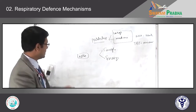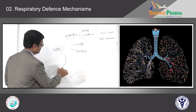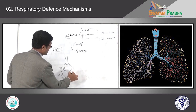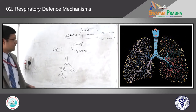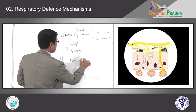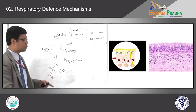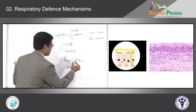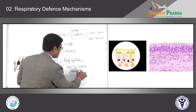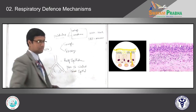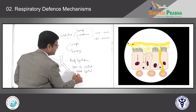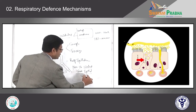When the majority of particles are cleared by the nose, the next medium-size particles enter the tracheobronchial tree. The tracheobronchial tree is lined by respiratory epithelium — nothing but pseudo-stratified ciliated columnar epithelium — interspersed with goblet cells, which are mucus-secreting cells.